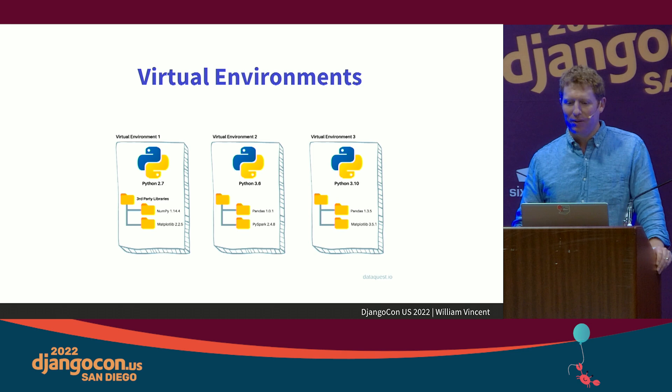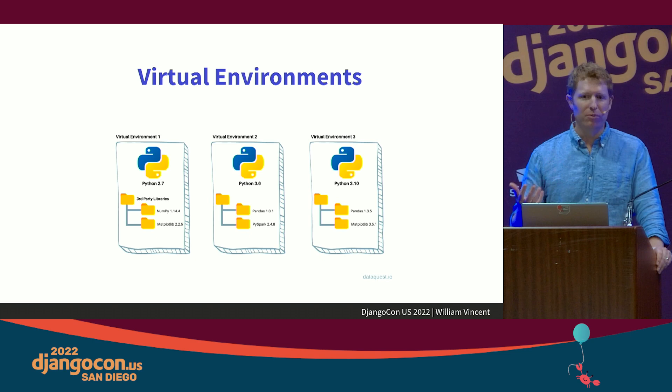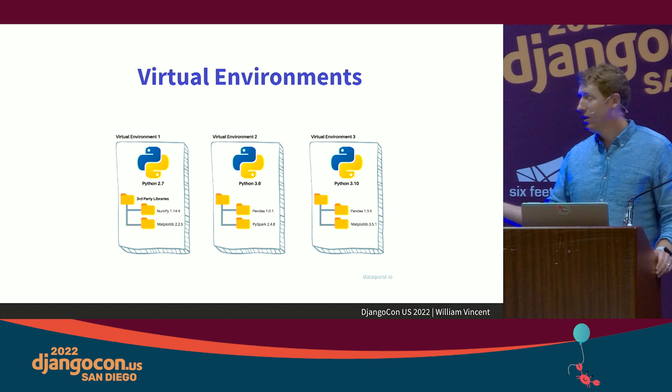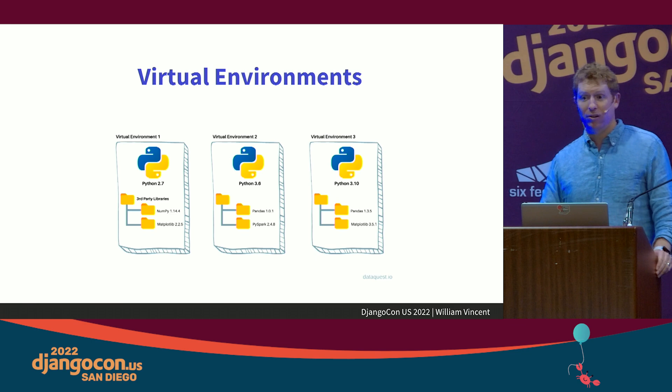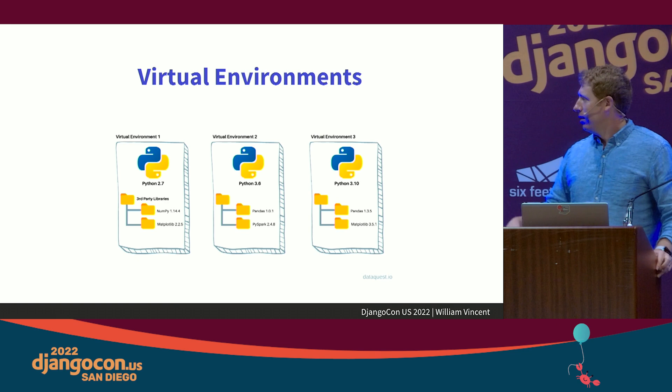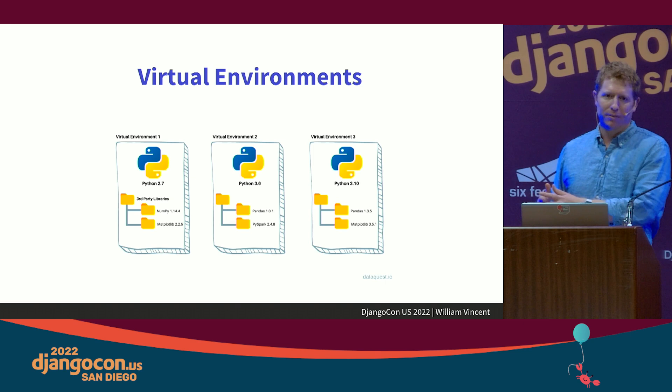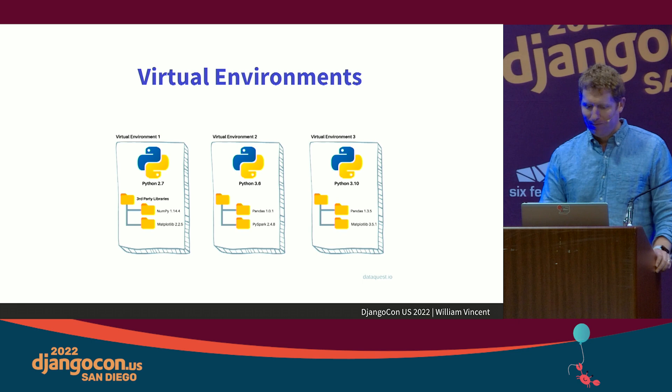Virtual environments — something not prominently mentioned in the Django docs. By default, things are installed globally on your computer. For each project you want to isolate your Python dependencies: Python 3.6 in one, Python 3.10 in another, different Django versions — a nice little box to control everything. You can use the built-in `venv` module, Poetry, or pyenv. This is another thing that really trips up beginners.